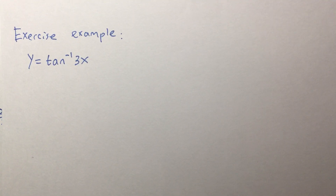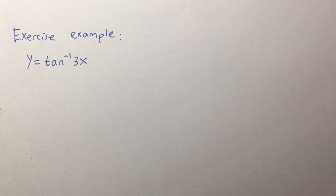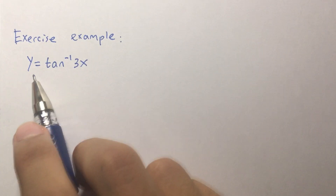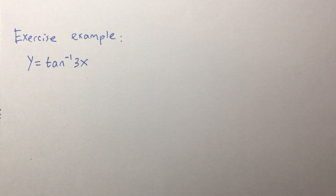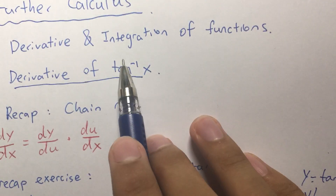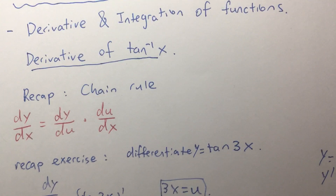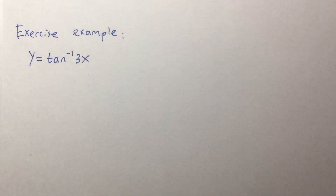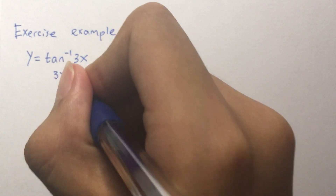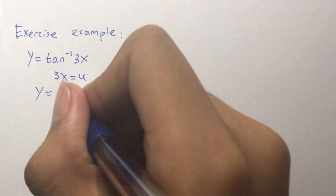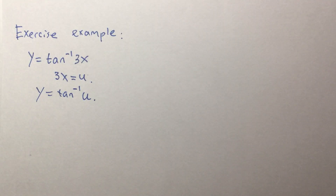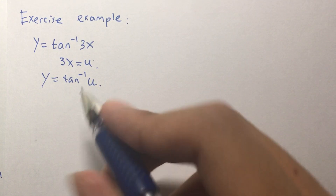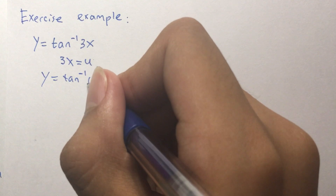The example is y equals inverse tangent of 3x. Although we haven't learned the formula for this, we can prove it ourselves. Once we prove and find out the value, we'll see it matches our aim, which is to differentiate inverse tangent x. The first thing we do is change 3x into u, so 3x equals u, and y equals inverse tangent u.